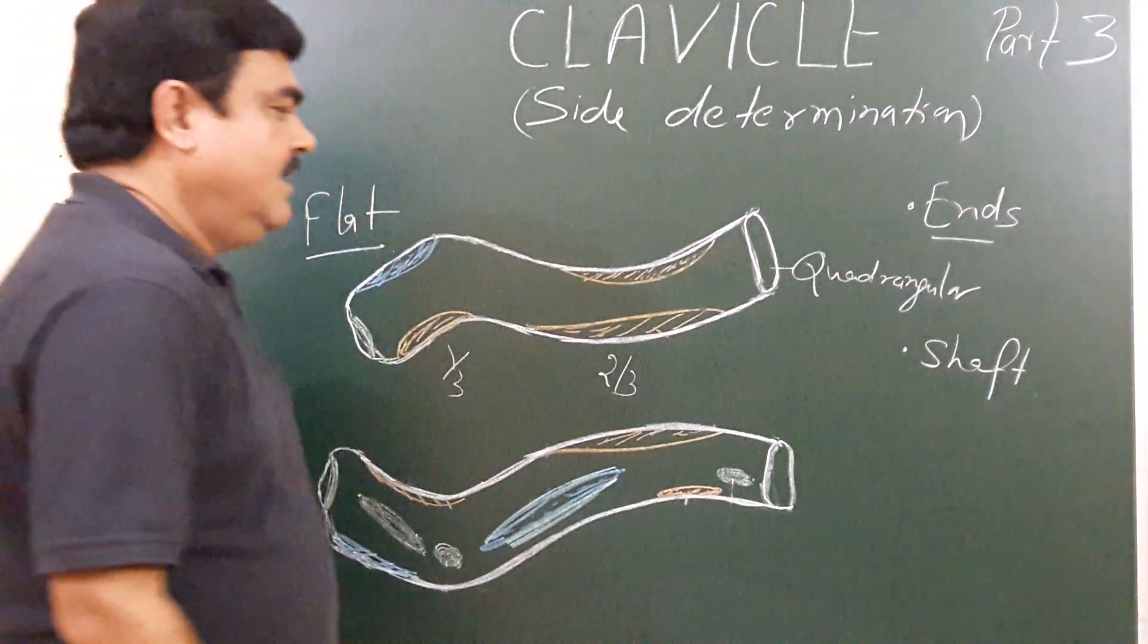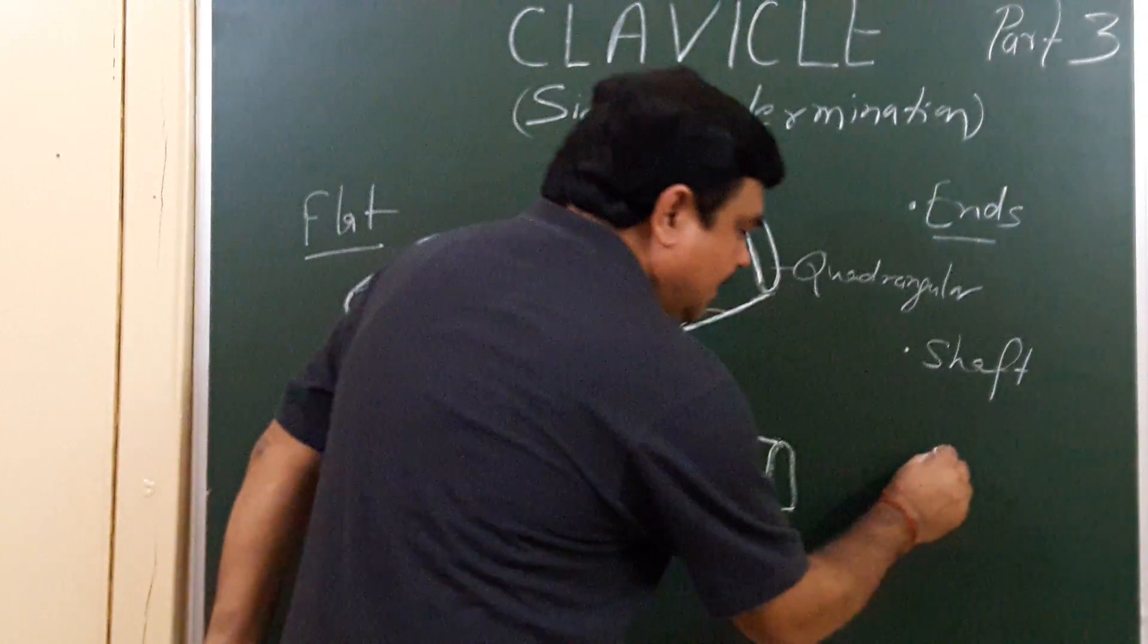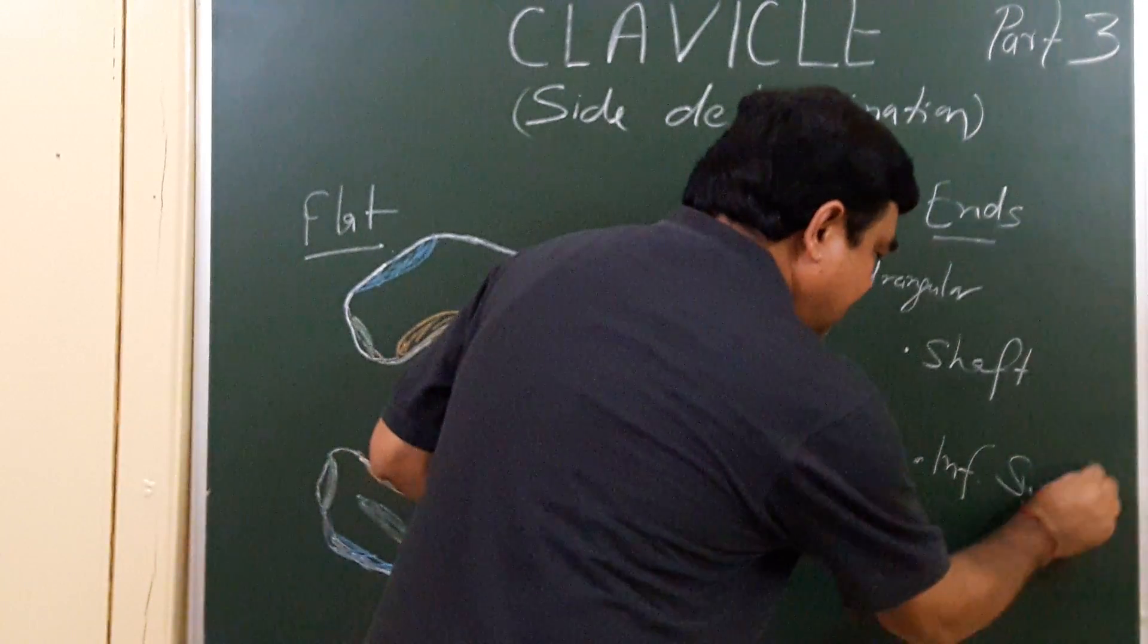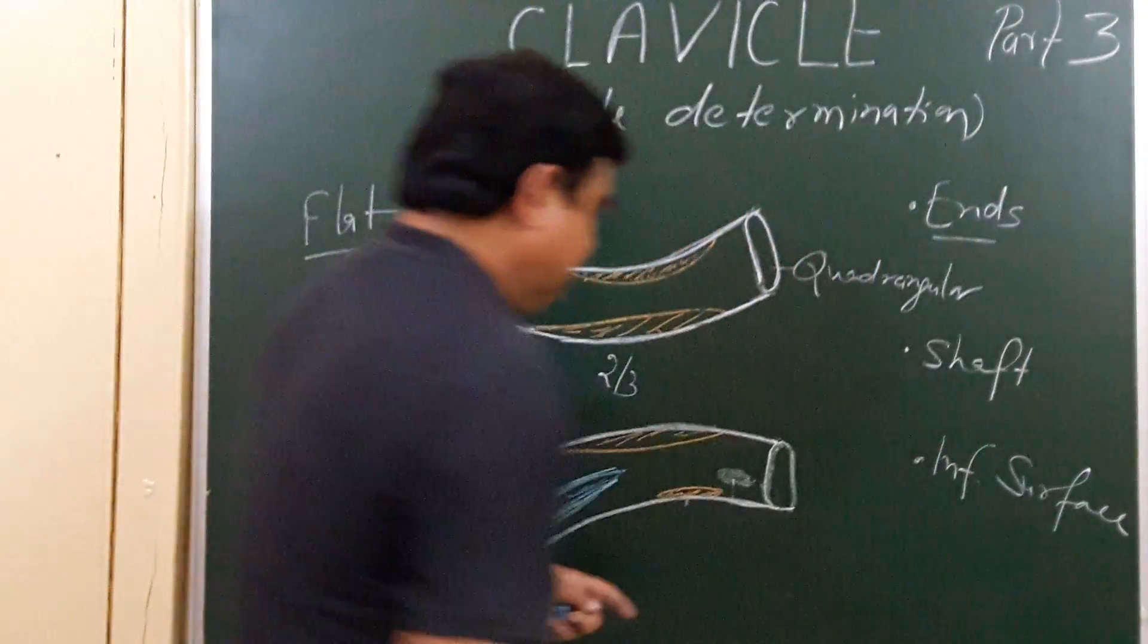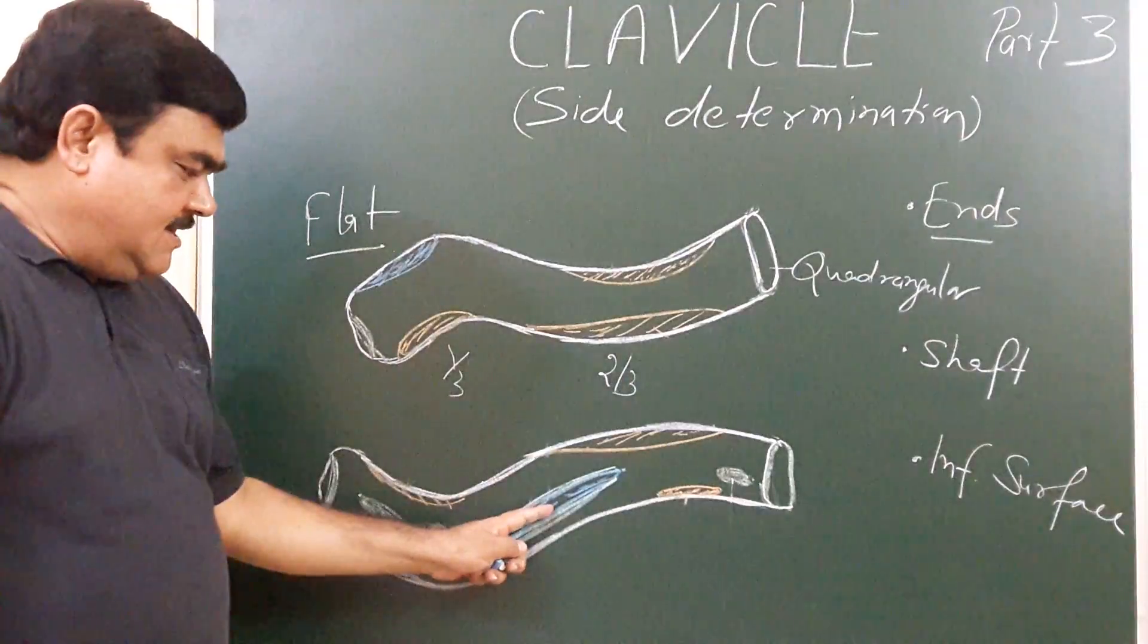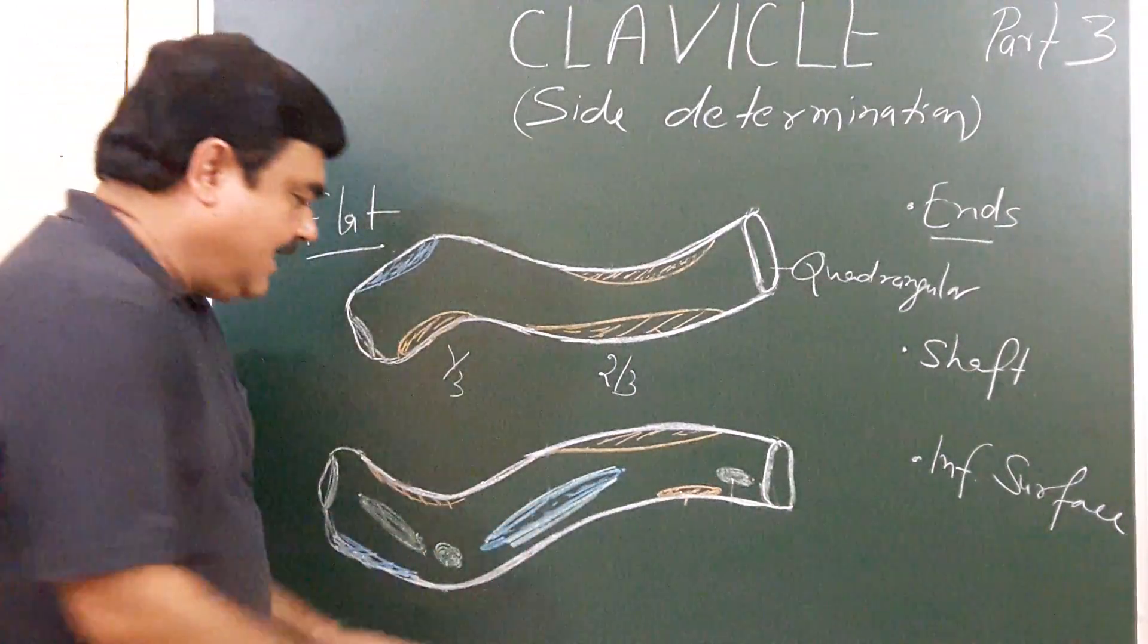And the third important thing is the inferior surface. As you can see, this is the subclavian groove on the inferior surface.